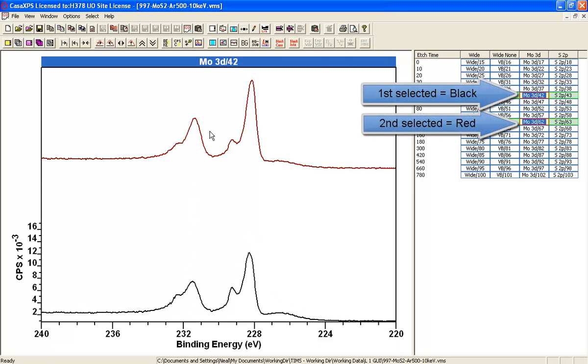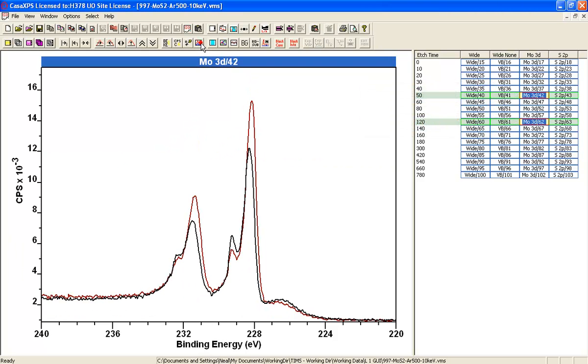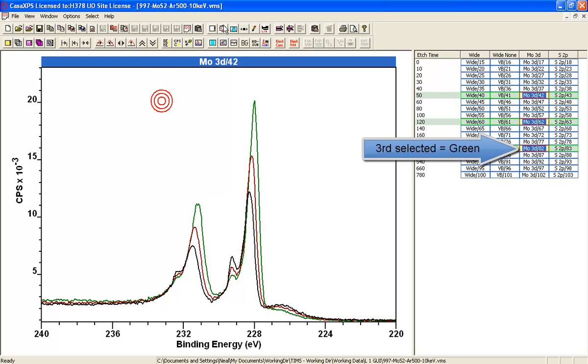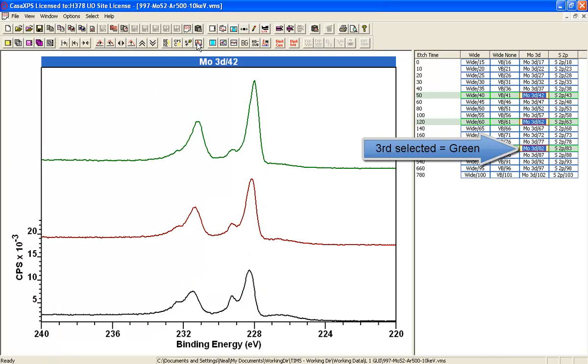I can see this by offsetting the data, and with each spectrum I add to the selection, I get a new member of the custom color palette being used.